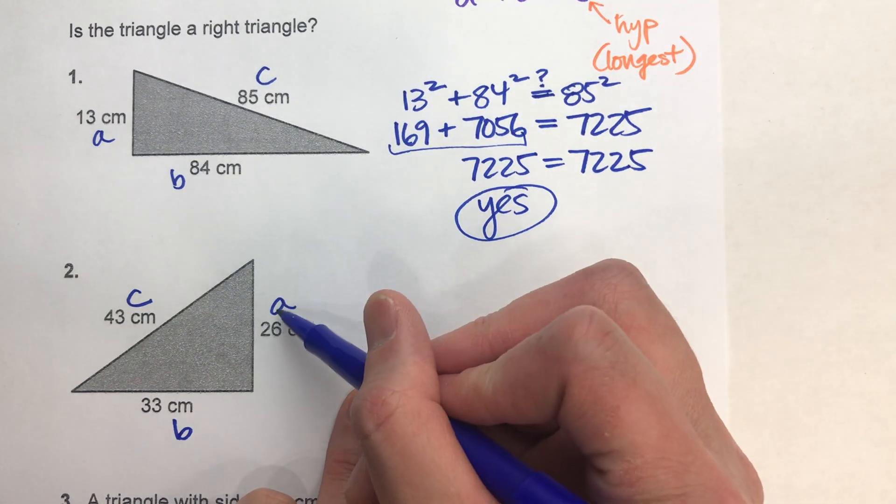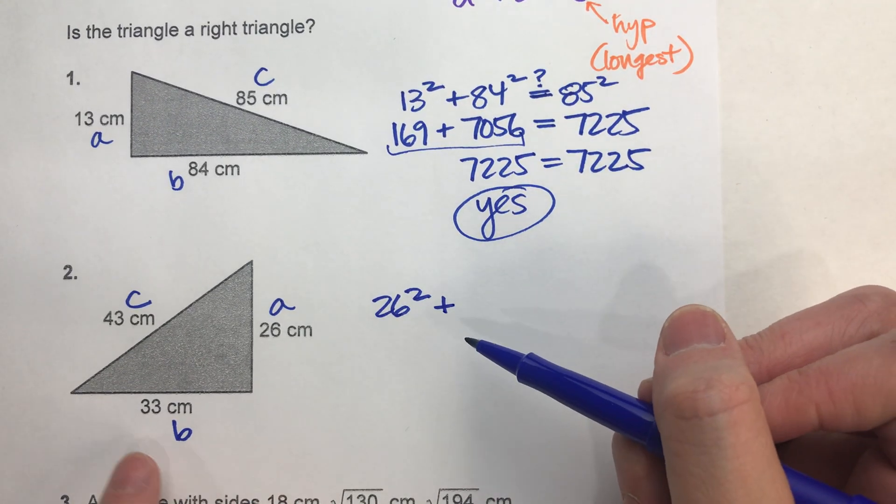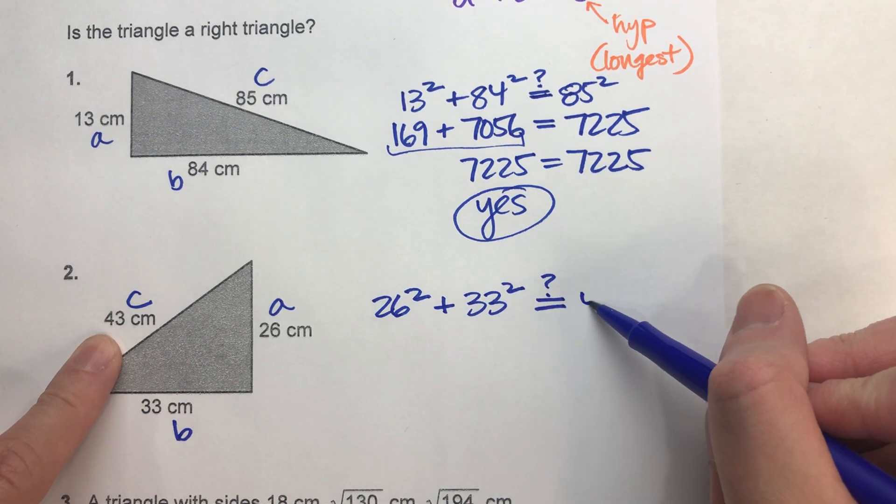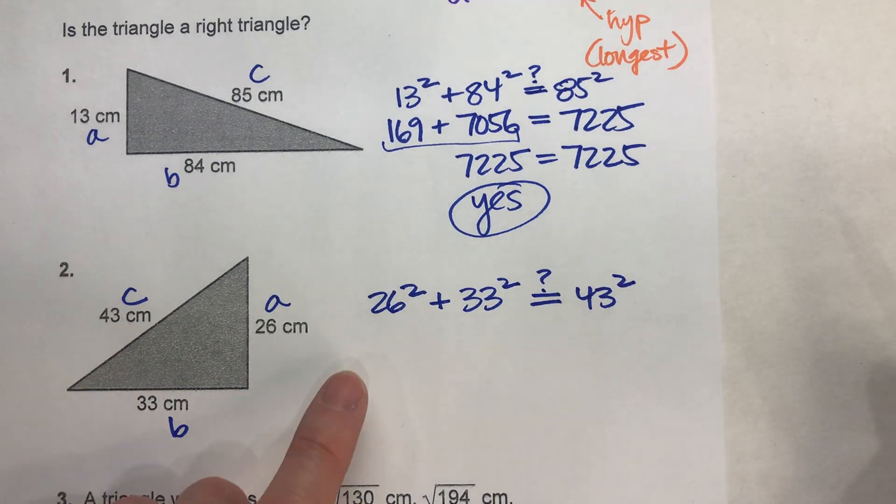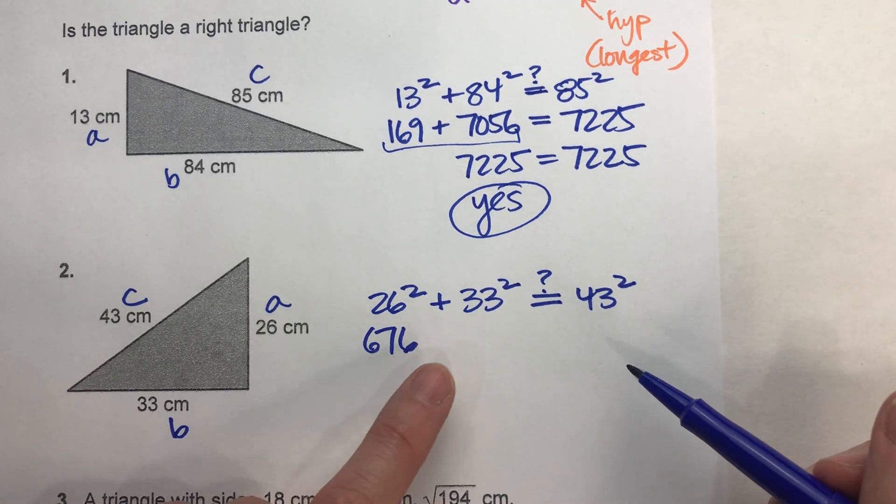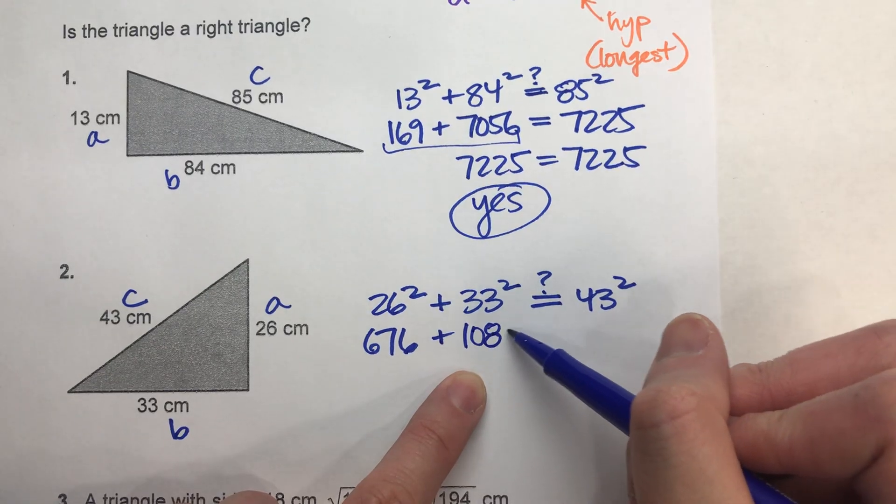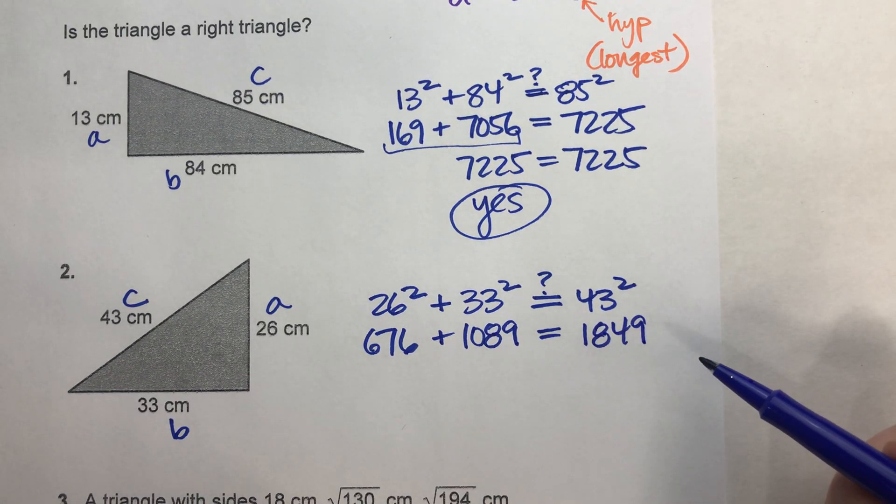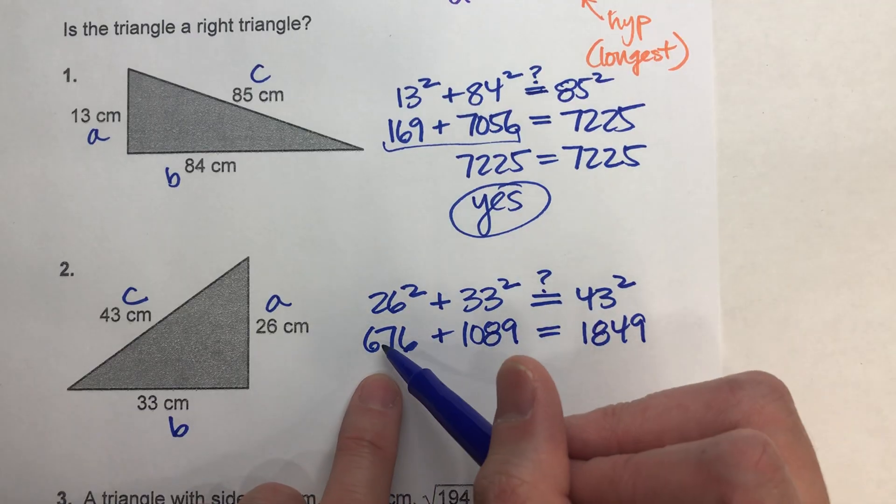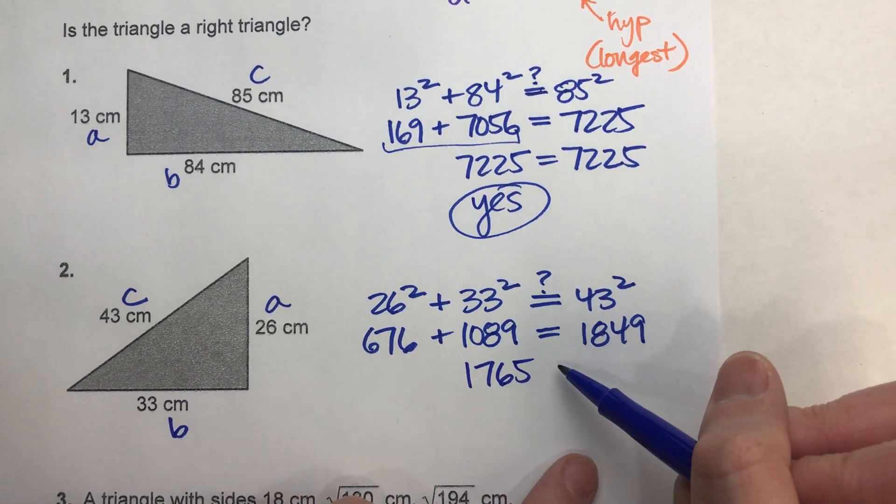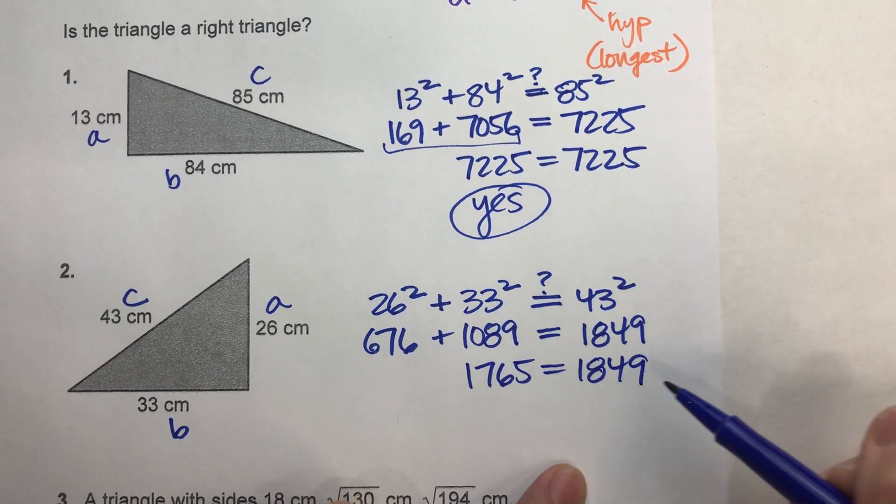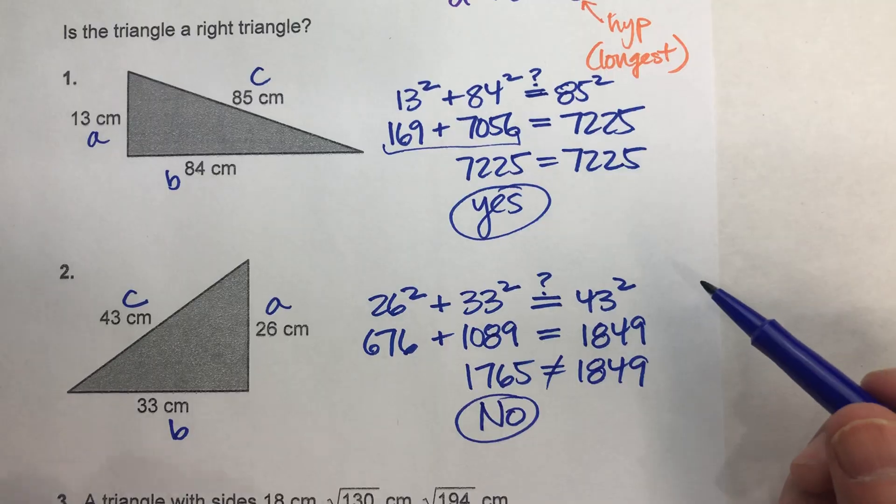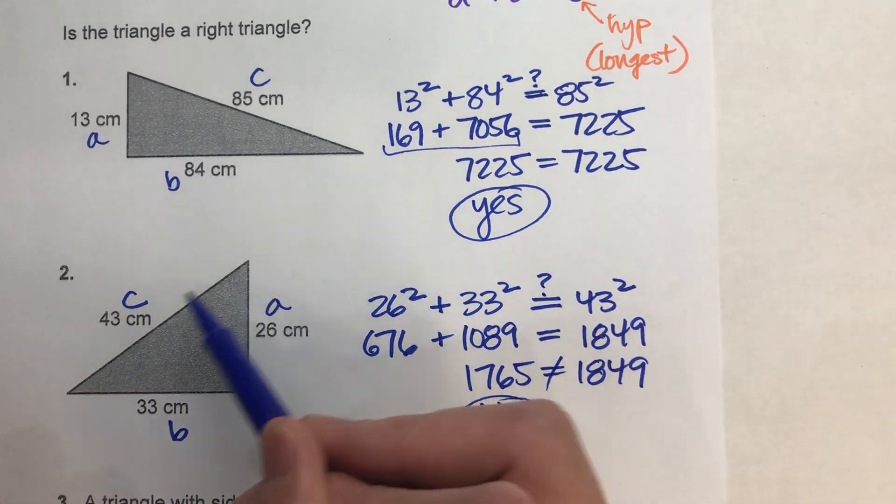Does A squared plus B squared equal C squared? A is 26, so 26 squared, plus B is 33, 33 squared. Does that equal C squared, 43 squared? Well, 26 squared is 676. 33 squared is 1,089. And we want to know if it equals 43 squared, which is 1,849. Let's add these two together. 676 plus 1,089 is 1,765. Does that equal 1,849? Obviously not. So they aren't equal. So is this a right triangle? No. It's not a right triangle because the Pythagorean theorem did not work for those three sides.